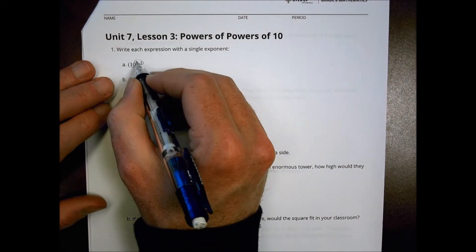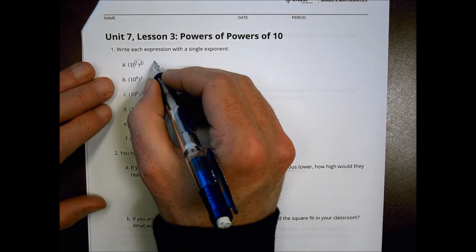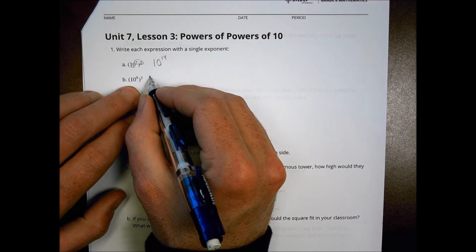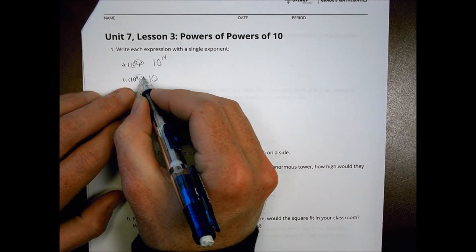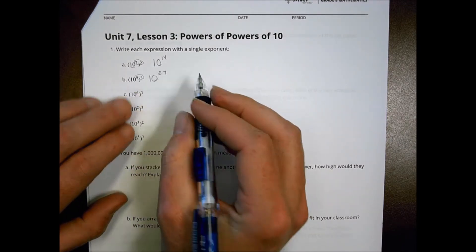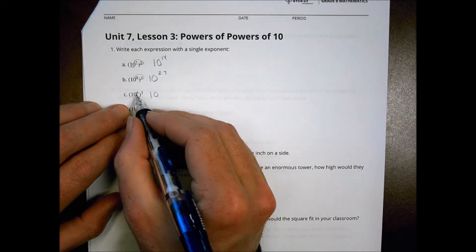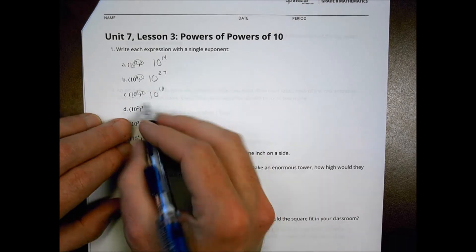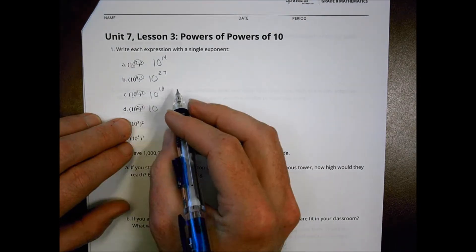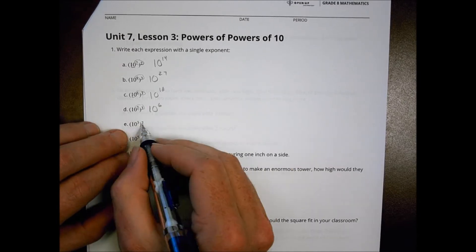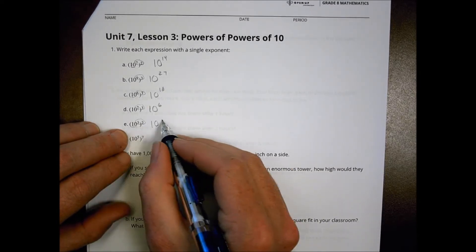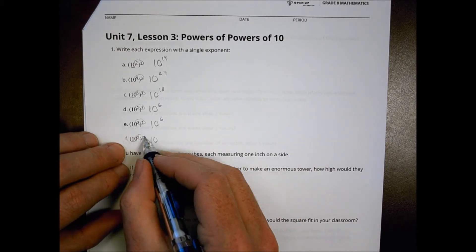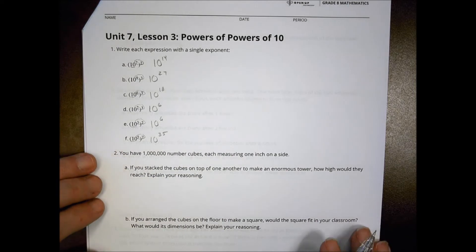We're going to be having the same base and multiplying the exponents together. So this is 7 to the second power, so that's 7 times 2, which is 14. We'd say it's 10 to the 14th power. Here the base stays the same, 9 to the third power is 9 times 3, which is 27. Base stays the same as 10, and 6 to the third power is 6 times 3, which is 18. Base here stays the same, 2 times 3 is 6. Base is still 10, 3 times 2 is 6. And finally, we have base 10, and 5 times 7 is 35.